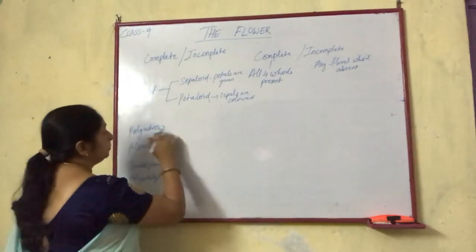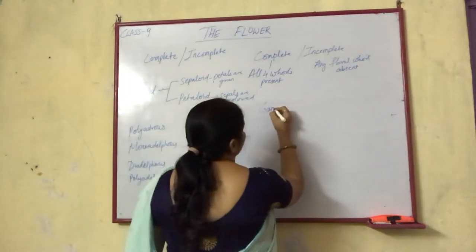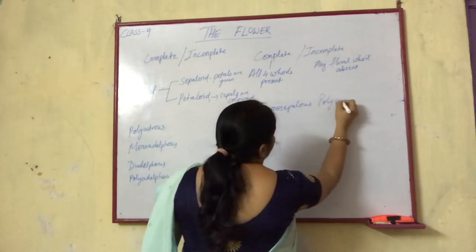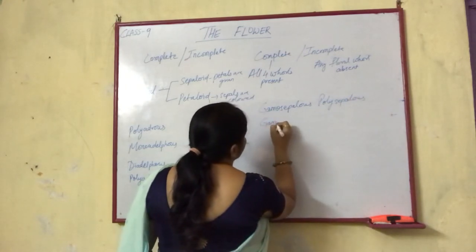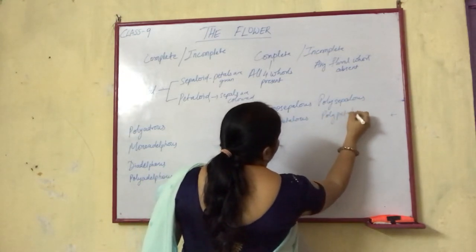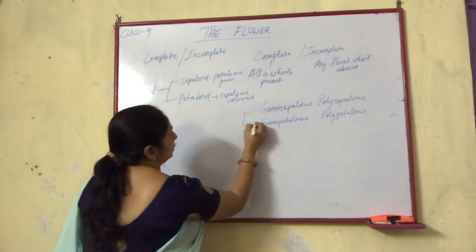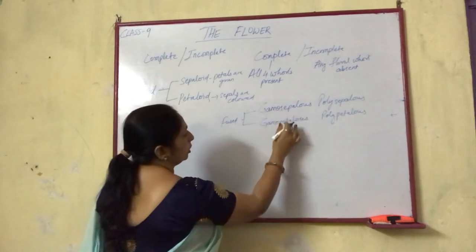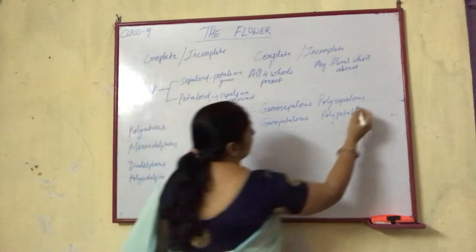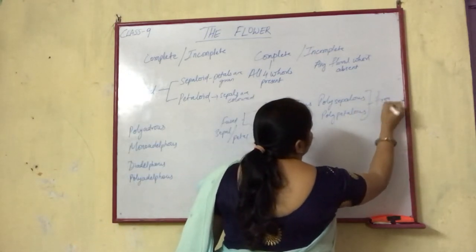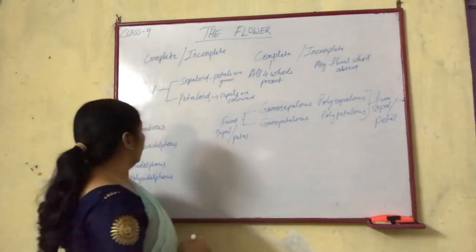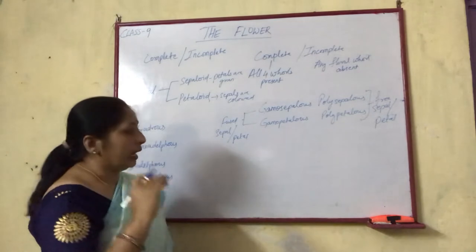For the arrangement: gamosepalous and polysepalous are when sepals are fused or free respectively. Gamopetalous and polypetalous are when petals are fused or free. 'Gamo' is for fused sepal or petal, while 'poly' is used for free sepal or petal.